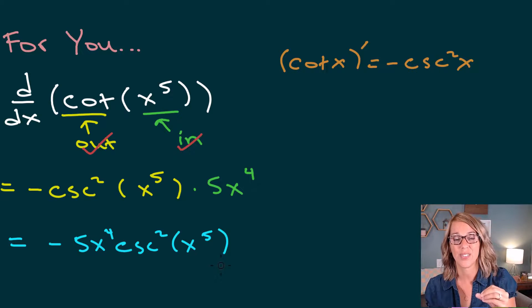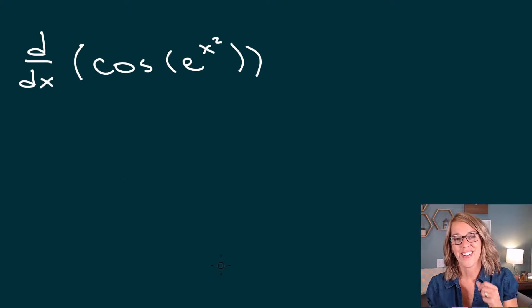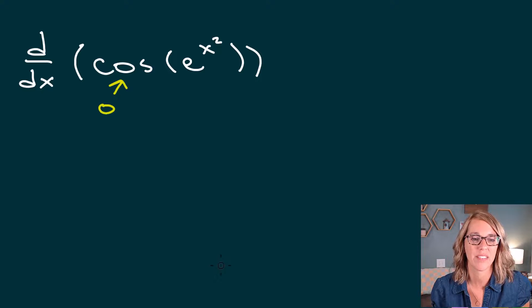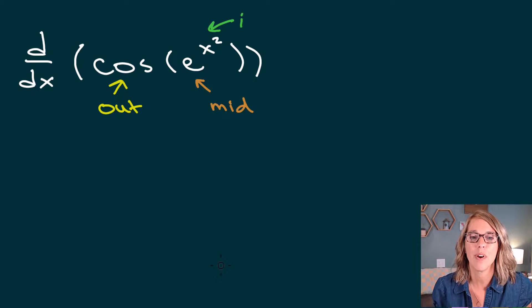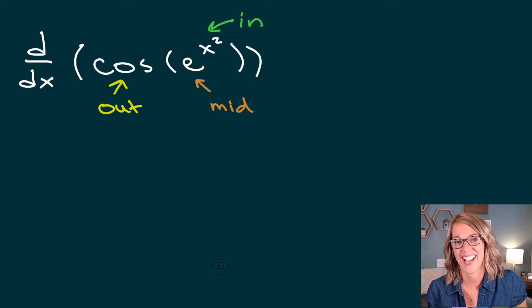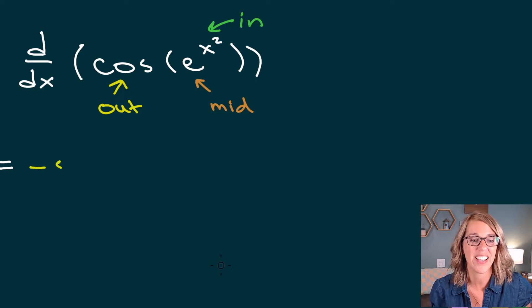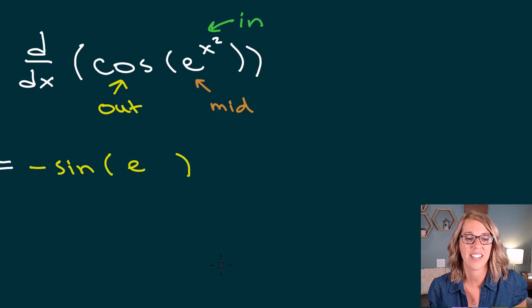Let's do one last example with three layers. Peeling those layers apart: the outermost function is cosine, the next function is e to the, which is the middle function, and x squared is the innermost function. So I have outer, middle, and inner — three different chains. Starting with the outer function: the derivative of cosine is negative sine, leaving everything else intact — so negative sine of e to the x squared. Outer layer finished.